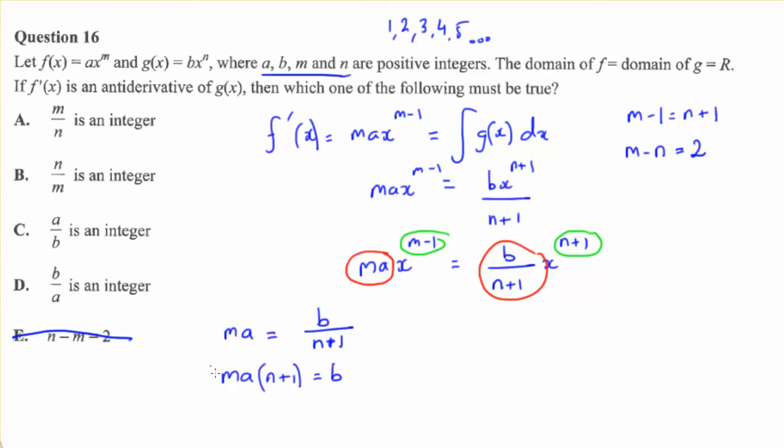Now, this doesn't help us too much. We could try dividing both sides by a. You really have to play around here. If we divide both sides by a, we get b over a.